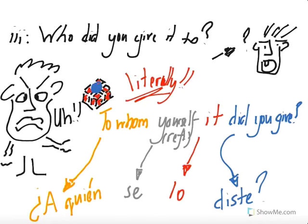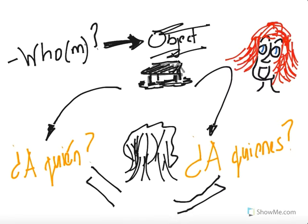Right, number three. Who did you give it to? Literally, to whom, yourself, it, did you give. So a quien, to whom, yourself, se, and then it, lo, and then diste, did you give. Again, the preterite has been yours, ladies and gents. I hope you like the little present there. Can you see it? Yeah? There. It's nice, isn't it? Right.